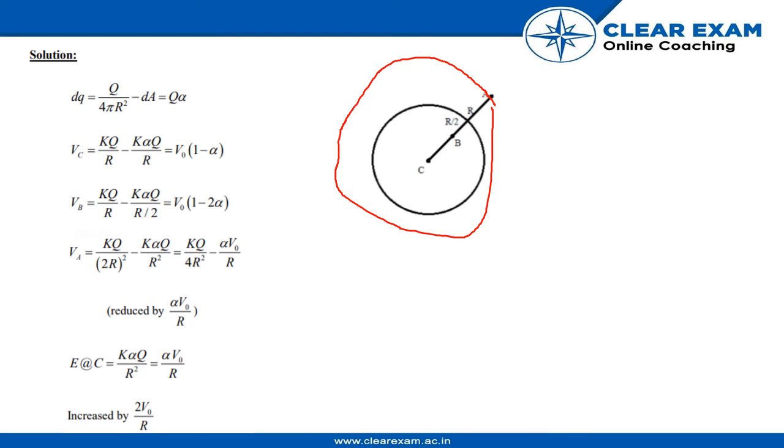Where K becomes constant and α would be same as before, so we would conclude this answer by putting value of K, which is α*V0 by R. Now we would increase by 2α*V by R, so statement third is true.